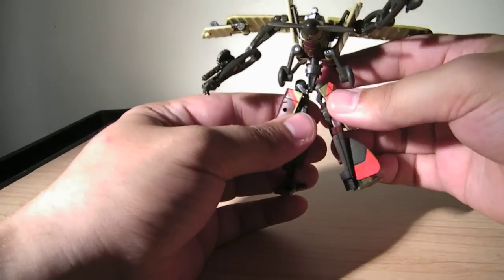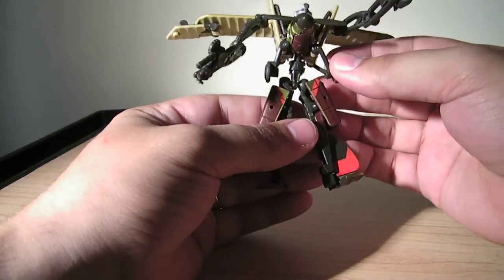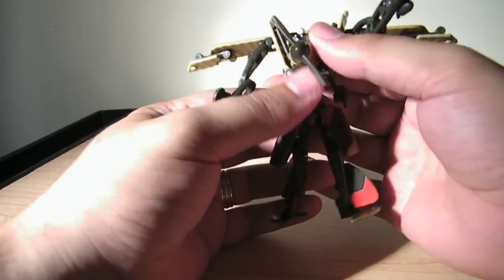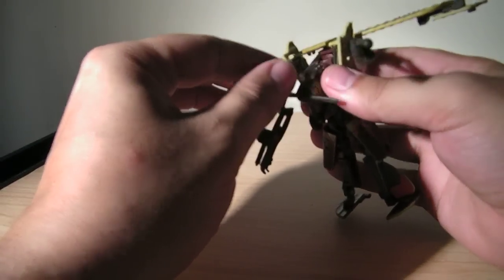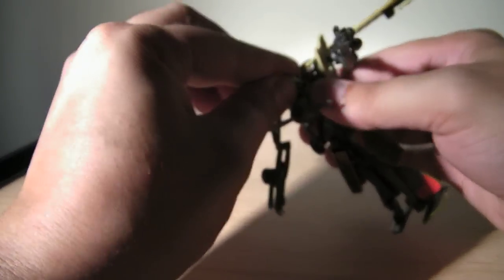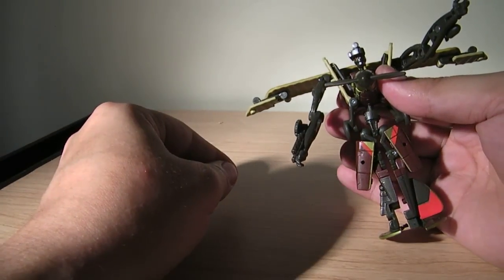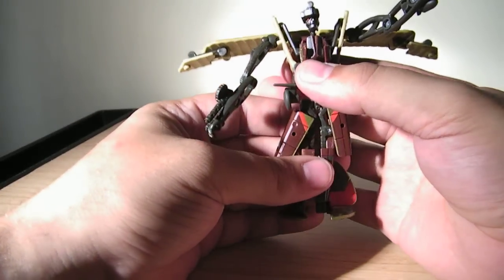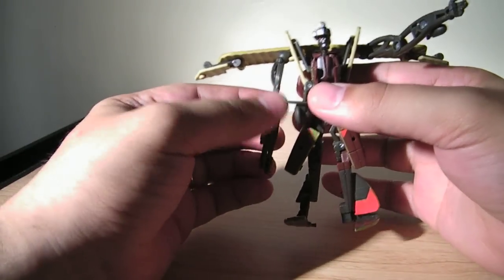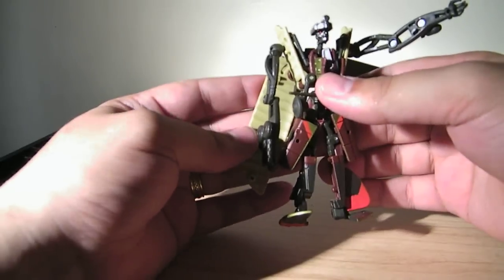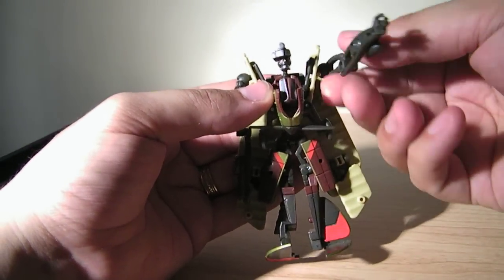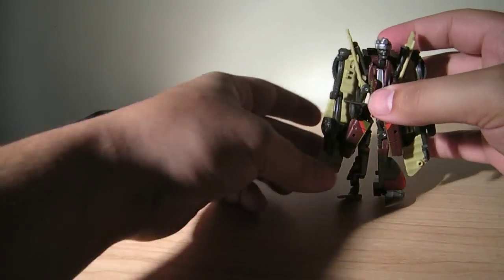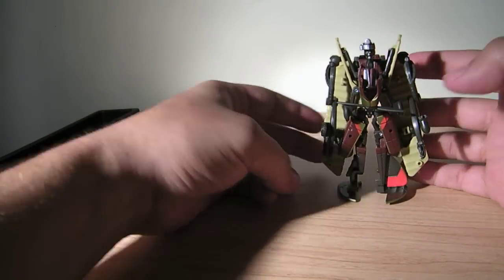He does kind of have asymmetrical legs with his fin over here. Fold that down. Then you want to pull his nose head up, the engine becomes his head, and then fold the nose down like this. And then his wings kind of come down as a cape behind him. And there you have Ransack in robot mode.